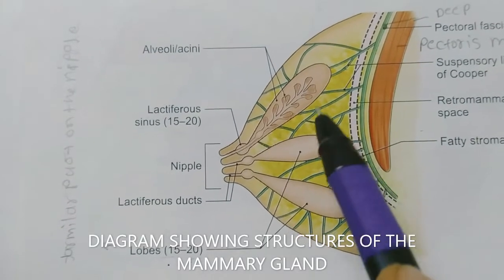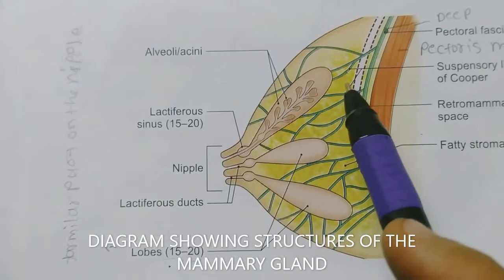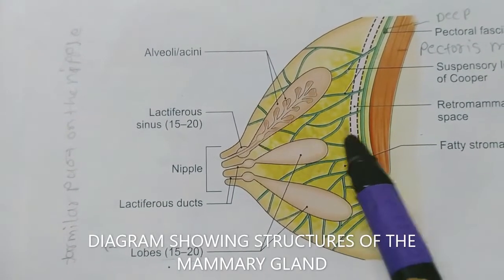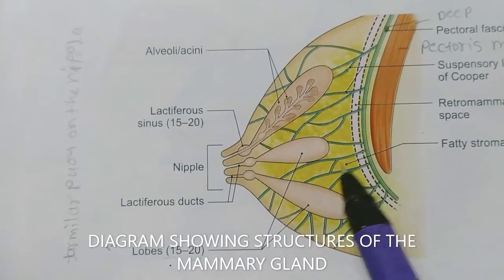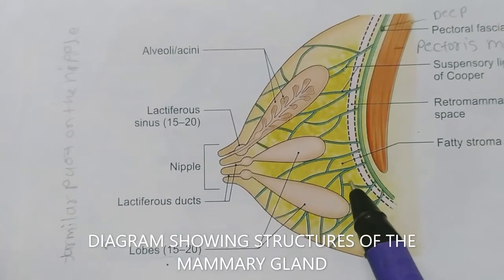The second is the fatty stroma, which is present between the fibrous stroma and forms the main bulk of the breast.